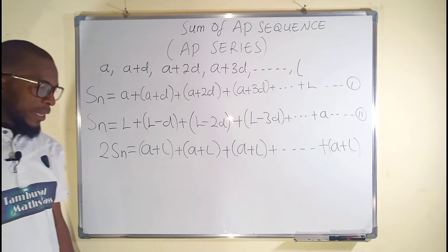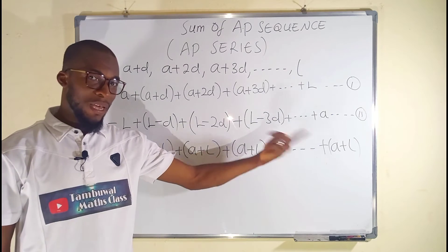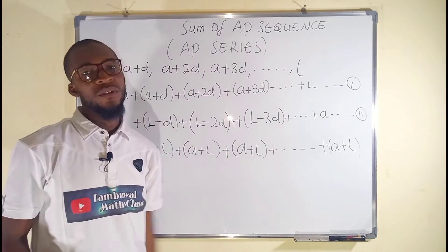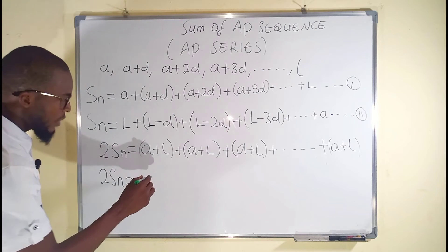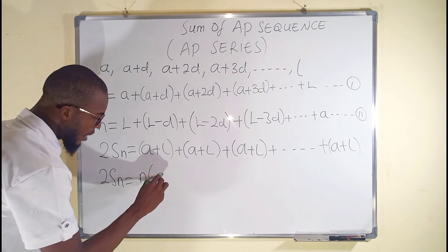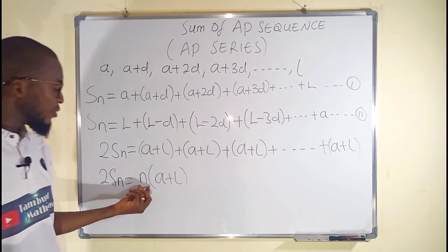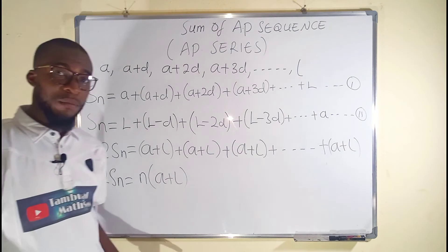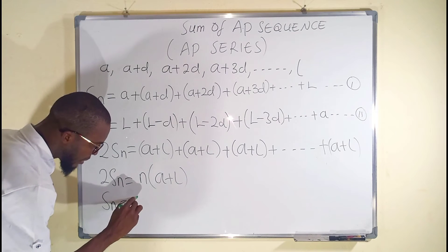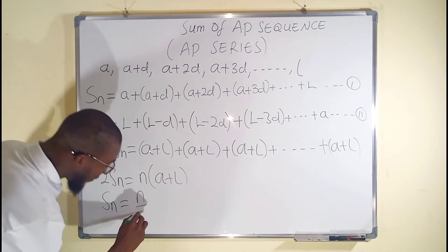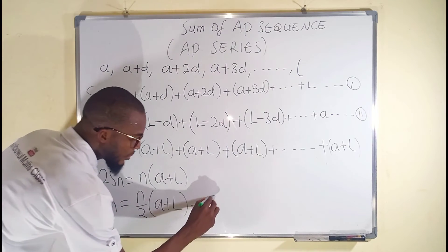How many (a plus L) pairs are there? Because of the ellipsis, there are n of them. So 2Sn equals n times (a plus L). Dividing both sides by 2, we get our first general formula: Sn = (n/2)(a + L). This is the sum of n terms using the first term and the last term.